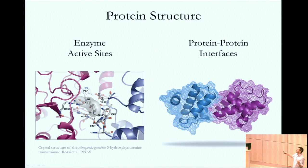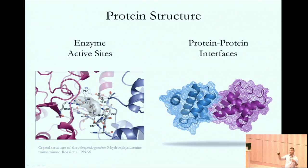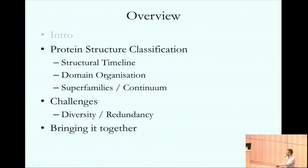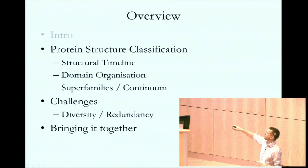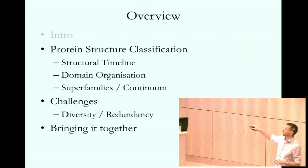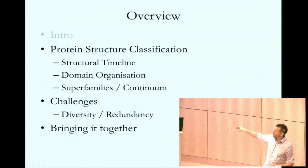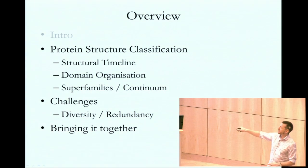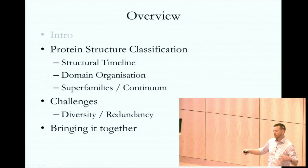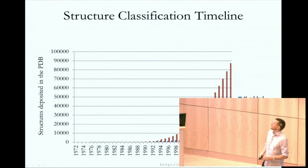Equally, we have protein-protein interfaces — another big area in drug design and in evolution. Understanding this interface between two proteins, and in order to dock them and understand how they dock together, you need an idea of what they look like in 3D space. So that was a very quick intro. I'm from a structural classification background, so I'll give you some background about that world, go into some of the challenges we face, and then bring it together with our first initial attempts at providing visualization tools.